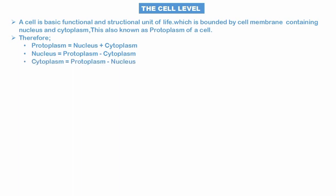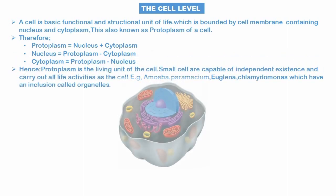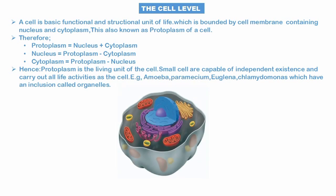Protoplasm refers to the living substance of the cell. Small cells are capable of independent existence and carry out life activities. Examples include Amoeba, Paramecium, Euglena, and Chlamydomonas.